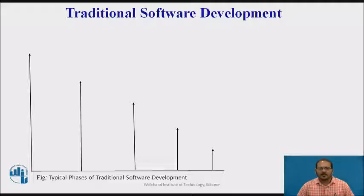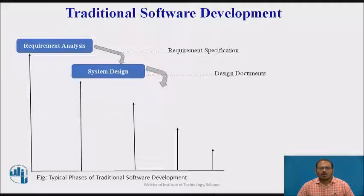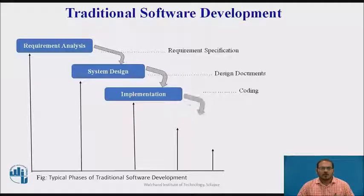Let me explain in brief the traditional software development models. The most popular one, which is being followed currently by many companies, is called the waterfall model or the modified V model. In this traditional waterfall model, software is developed in a sequential manner. We start with requirement analysis where we collect the requirements from the clients. Once the complete set of requirements are collected, we move on to the design phase, where the requirements are completely designed. After the design is over, we move on to coding, where that design is converted into various code using different programming languages.